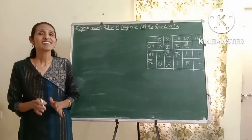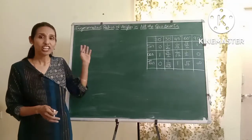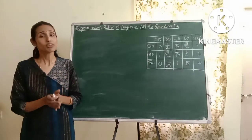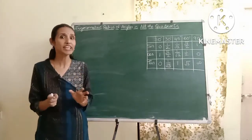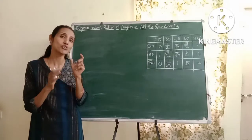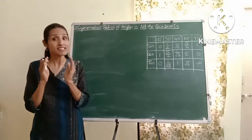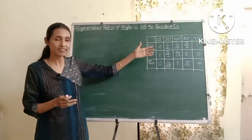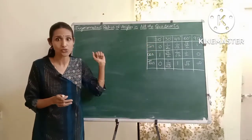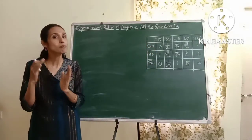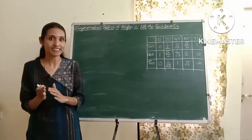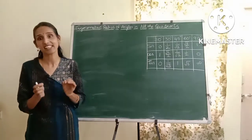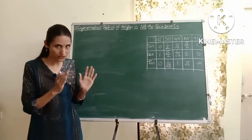Hello everyone. Today let's learn about the trigonometric ratios of angles in all the four quadrants. In previous classes you have already learned the trigonometric ratios of angles from 0 to 90 degrees. These are some standard angles and their trigonometric ratios. But what about angles which are more than 90 degrees? Do their trigonometric ratios also exist? Yes they do, and that's what we are going to see today.